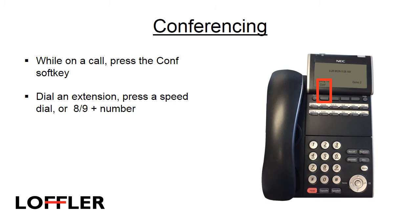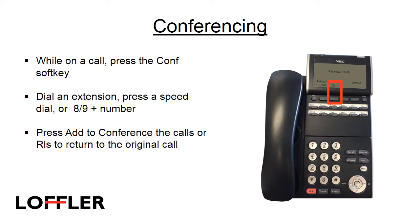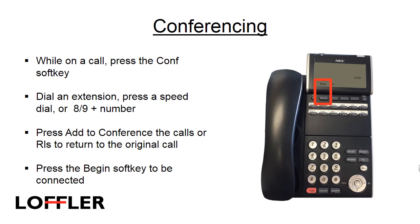To conference a party into a connected call, press the conference soft key. Then dial an extension, press a speed dial, or dial the trunk access code 8 or 9 plus the number. Press add to conference the calls or release to return to the original call. Press the begin soft key to be connected.